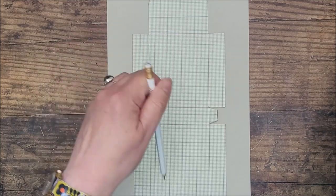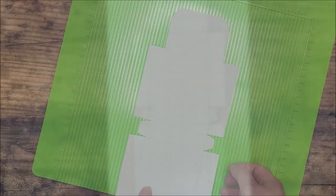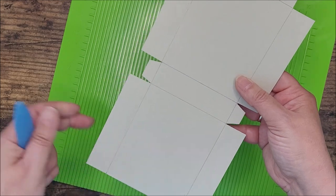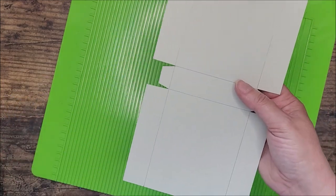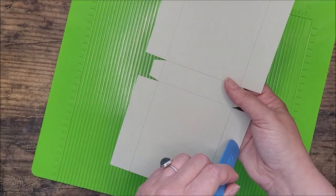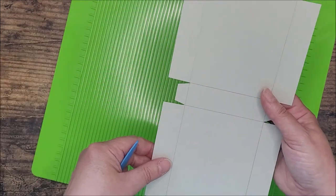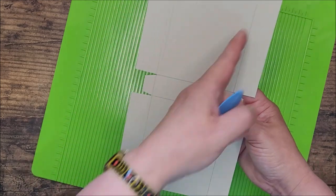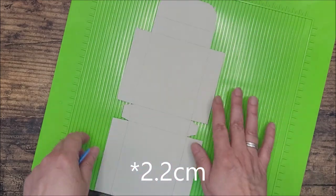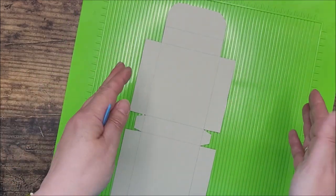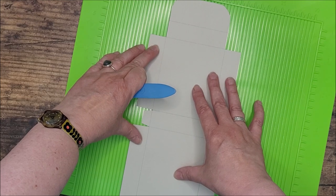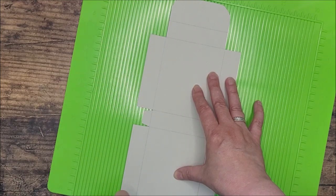Now that I've transferred my markings onto my cardstock, it's time to score the lines. This whole piece measures 30 centimeters by 12.8 centimeters. I've got to score down these lines, which are 1.2 centimeters in from each side. I don't have a scoreboard in millimeters, but what I can do is just line up where my pencil line is along one of the grooves on my scoreboard.